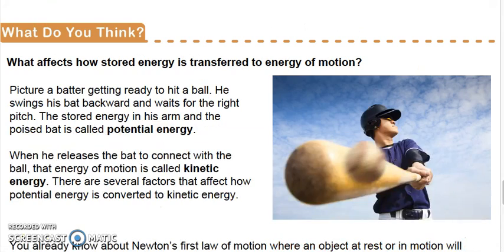What do you think? What affects how stored energy is transferred to energy of motion? Picture a batter getting ready to hit a ball. He swings his bat backwards and waits for the right pitch. The stored energy in his arm and the poised bat is called potential energy. When he releases the bat to connect with the ball, that energy of motion is called kinetic energy. There are several factors that affect how potential energy is converted to kinetic energy.